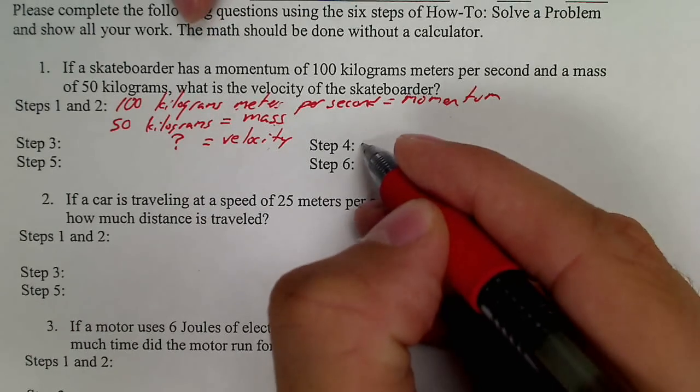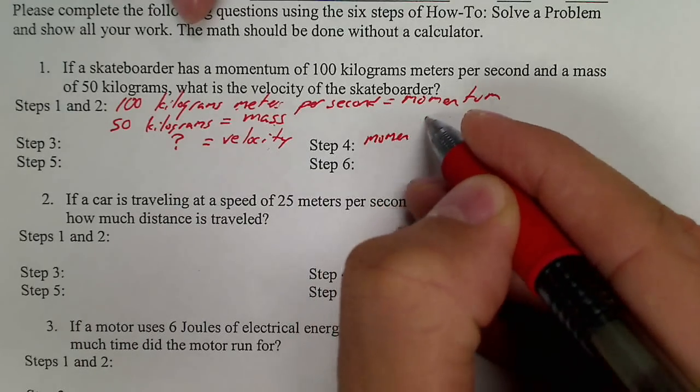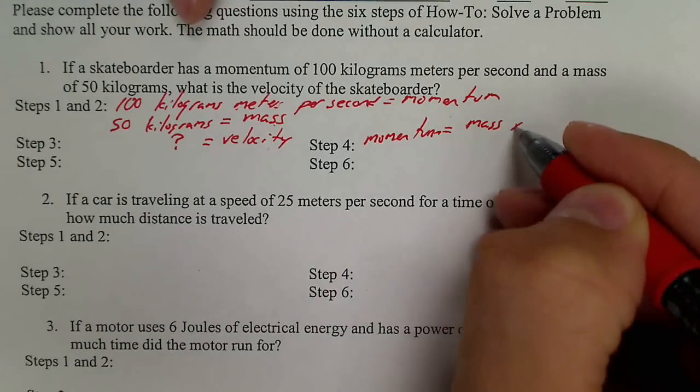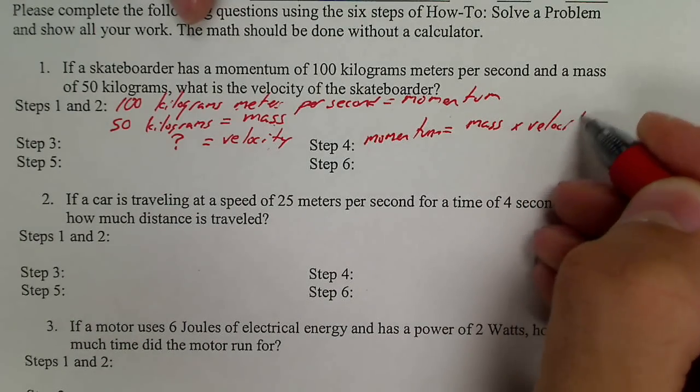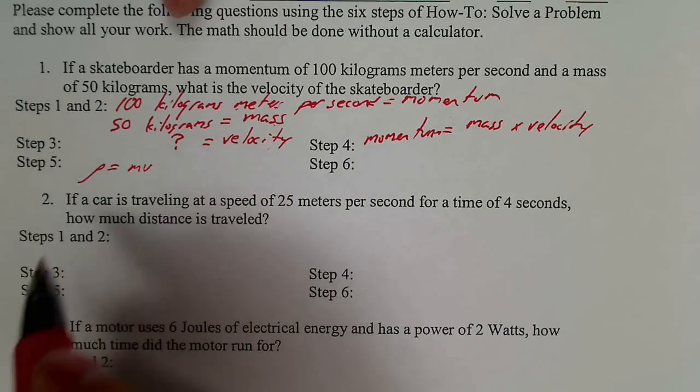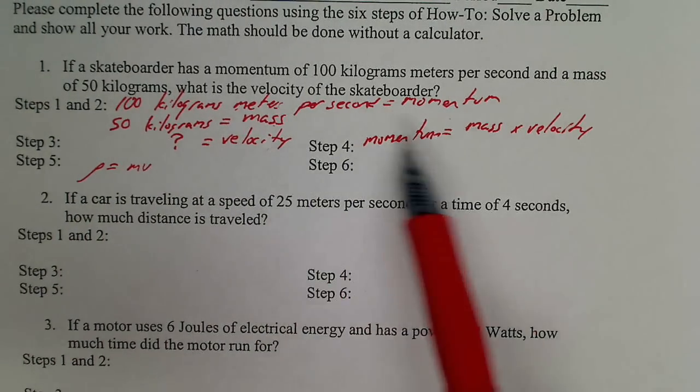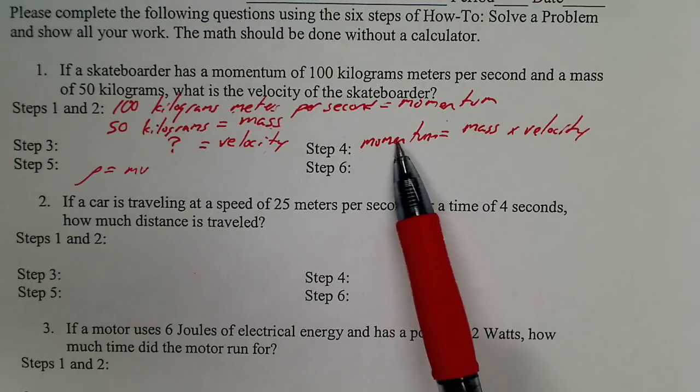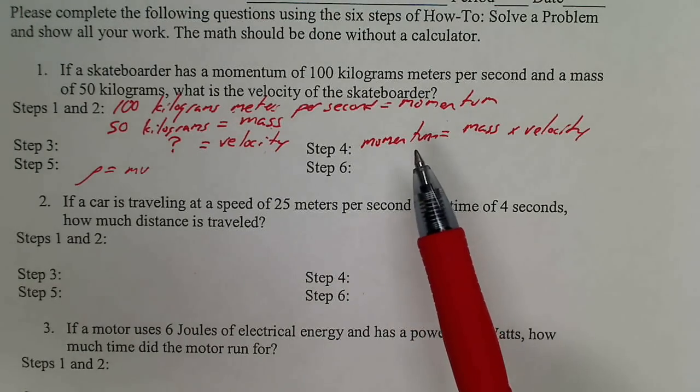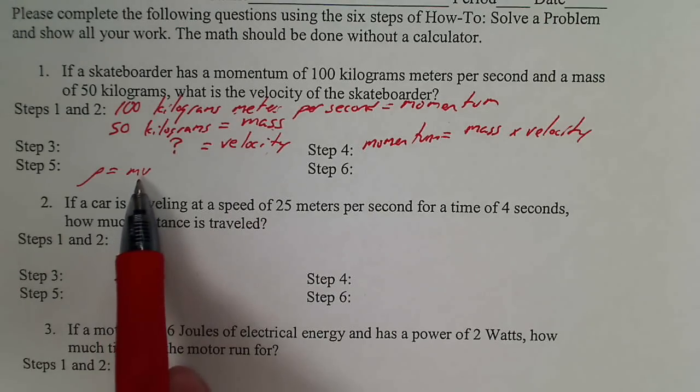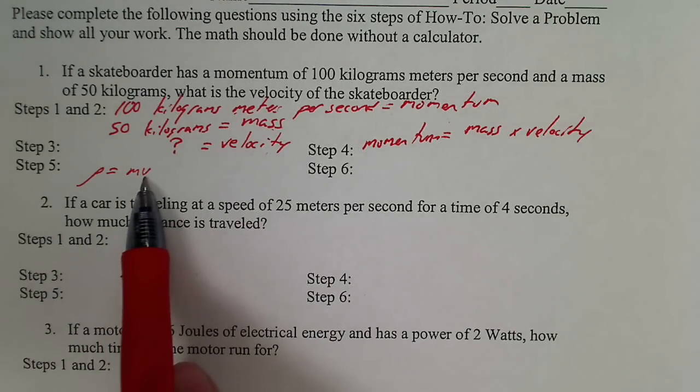So step four, momentum equals mass times velocity. In step five we're going to go ahead and manipulate because we're trying to find velocity and clearly velocity is not by itself. This equation is currently really convenient to solve for momentum. It's still the right equation. We just need to rearrange it first. So we're looking here and we see my velocity is here. Here is V. It is not by itself.